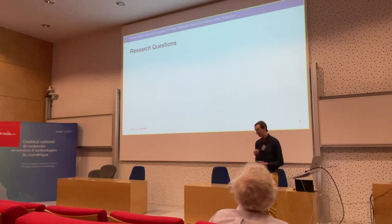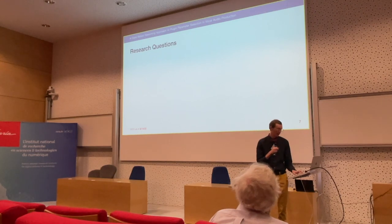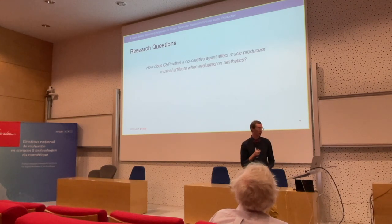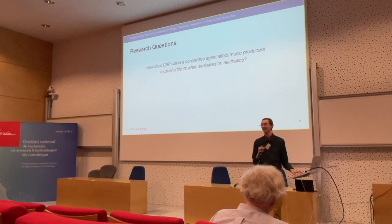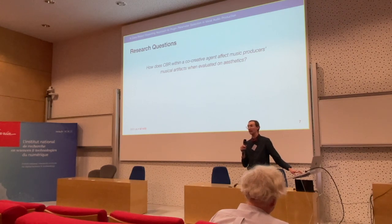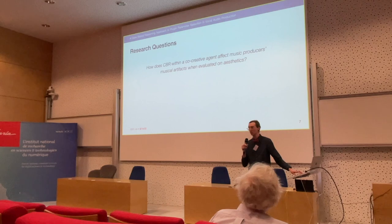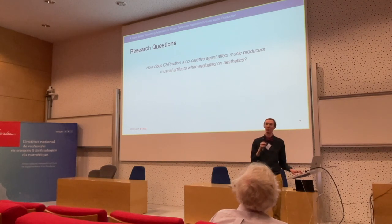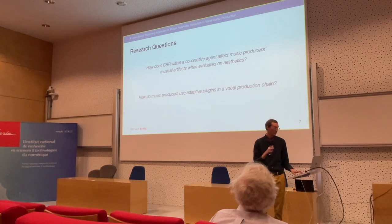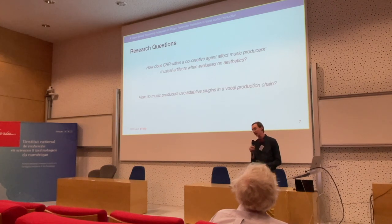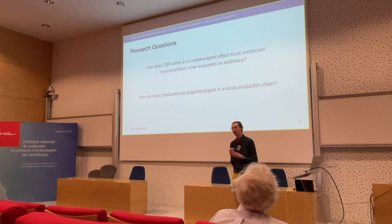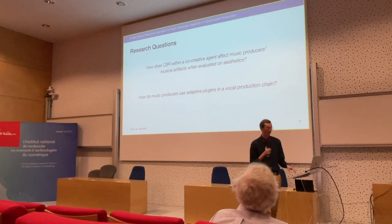We focused on two main research questions. The first: how does CBR within a co-creative agent affect music producers' output effects when evaluated on aesthetics? Rather than having a pure classifier, we're focusing on what sounds good — which is already really vague — so we focus on aesthetics. The second: how do music producers use adaptive plug-ins in a vocal audio chain? We're exploring how they would use something they're already kind of familiar with, given a new plug-in containing a new creative agent.